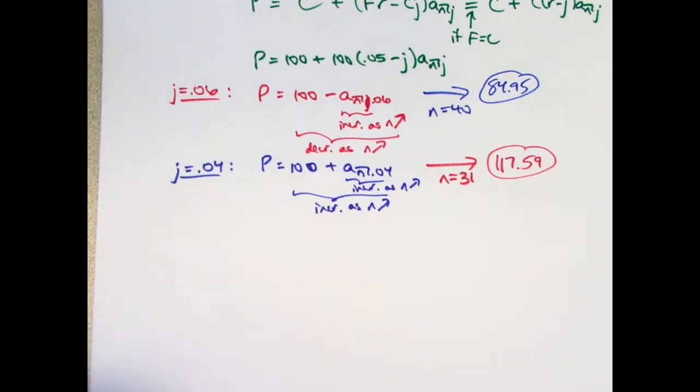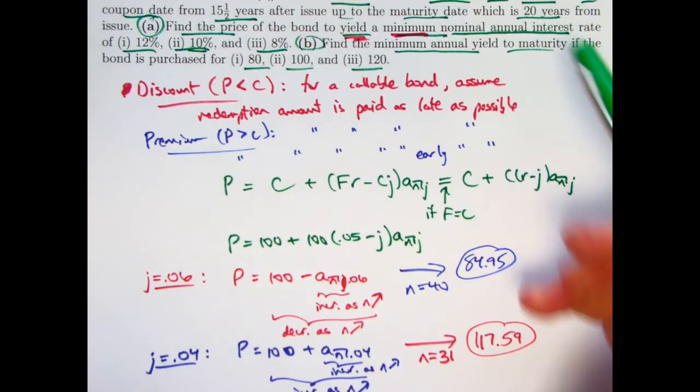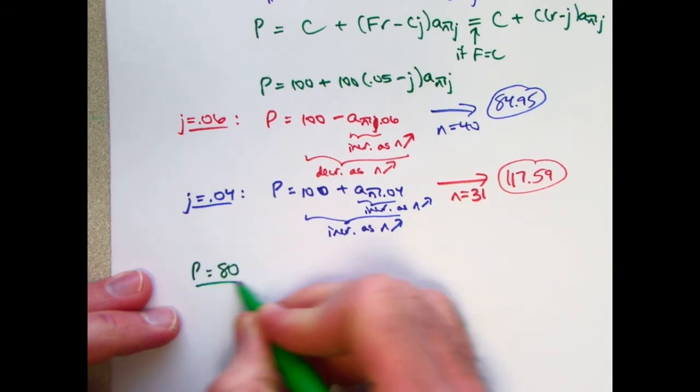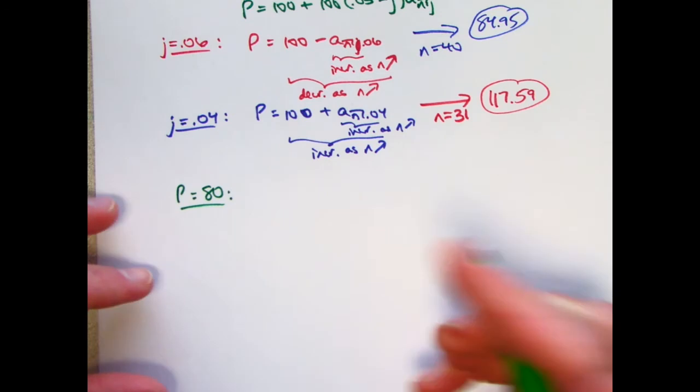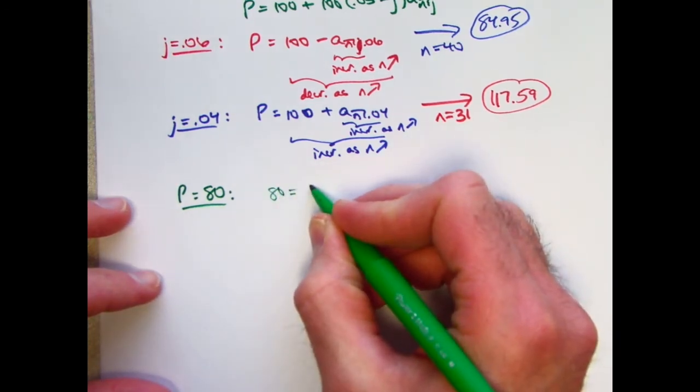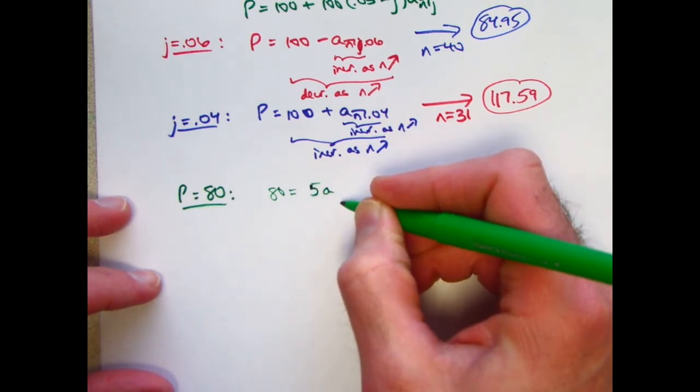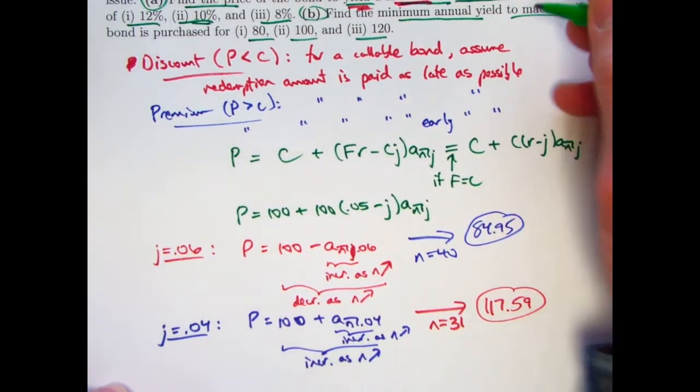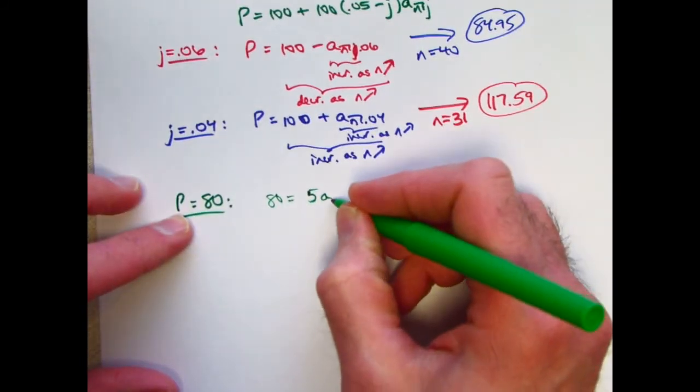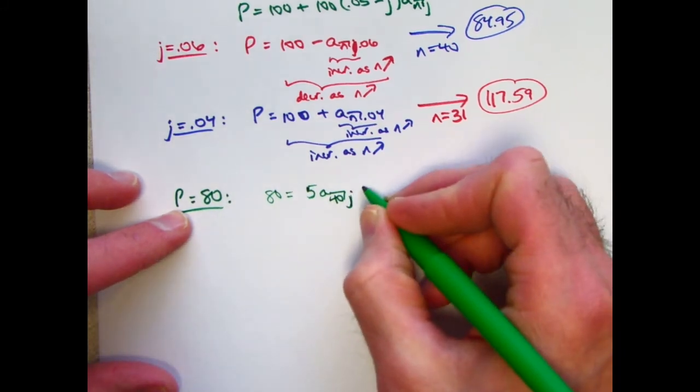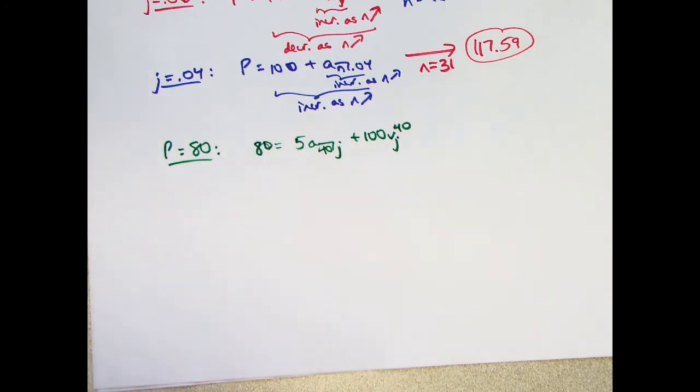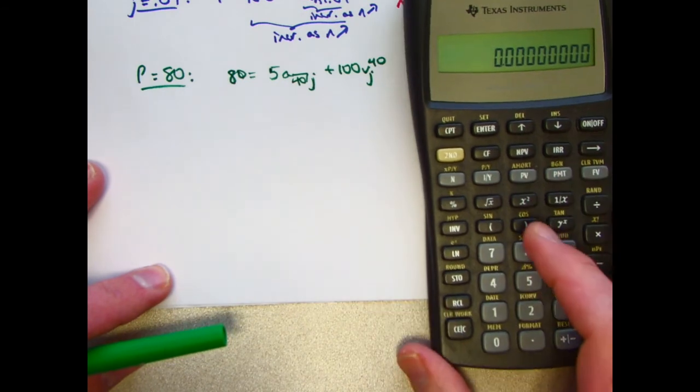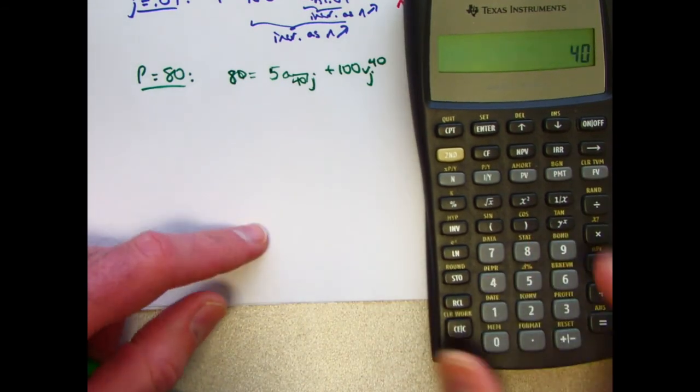On to part B. In part B, we're going to need to use the financial functions of the calculator. So for the first part of that, we're assuming the price is 80. You don't have to write down an equation here if you know what to just plug into the calculator. If you write down an equation, I'm typically most comfortable thinking about it in terms of the basic formula. 80 would be F times R is 5. And would be, well, once again, we need to think about the concepts here. We're buying at a discount here. So we want to assume it's redeemed as late as possible. So n would be 40 here. j is unknown. We have to solve for j. Redemption amount is 100. So I'm writing down that equation. You don't have to.